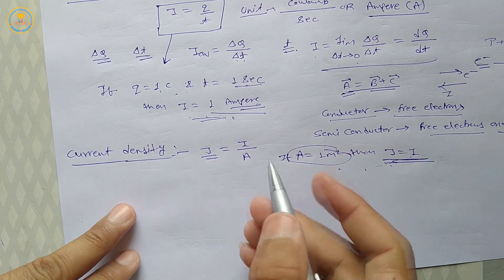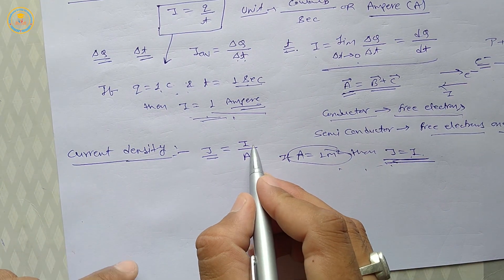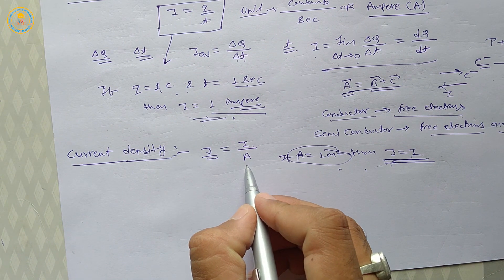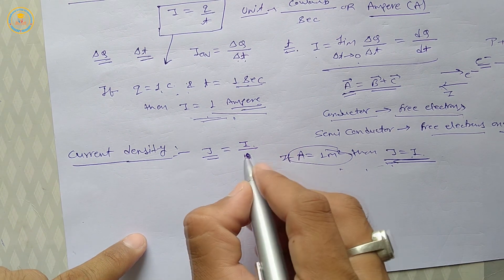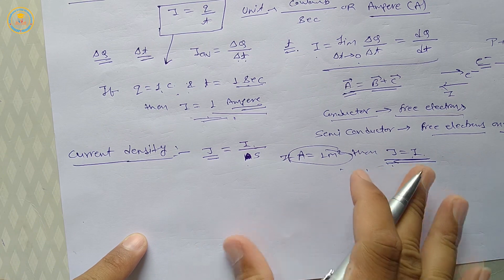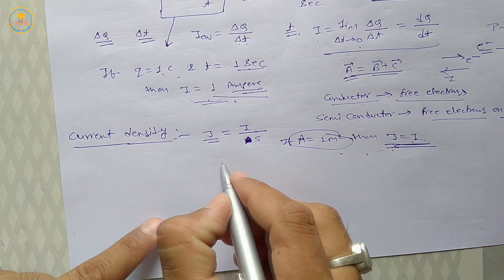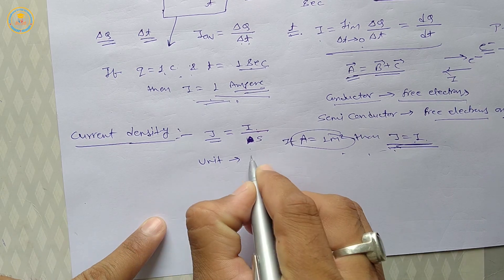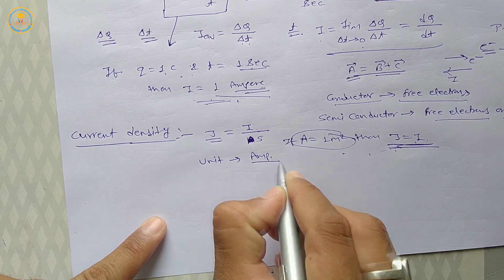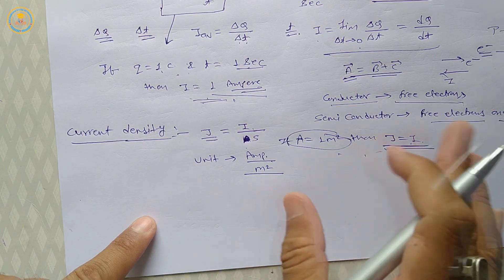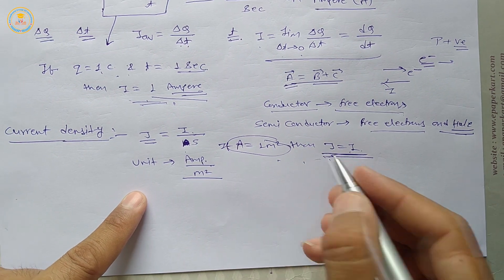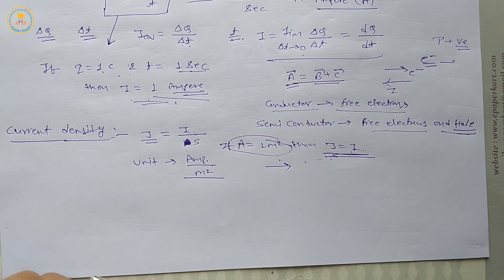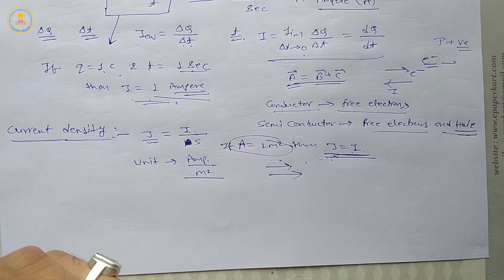The unit of current density: since the unit of electric current is ampere and the unit of area is meter square, the unit of current density is ampere per meter square. Current density is a vector quantity and its direction is in the direction of current.